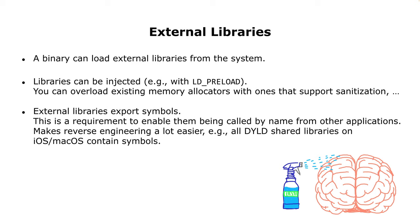In some binaries there might be external libraries loaded from the system, and libraries can also be injected or overwritten - you can change functions with another library and use your own function instead. For example, you could replace the memory allocator so all mallocs are sanitized, which helps find memory corruptions. External libraries also export symbols, so they have to define symbol names. Whenever an external library is used, it's very easy to reverse engineer because of this requirement of exporting symbols to be called from an external application.